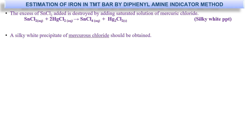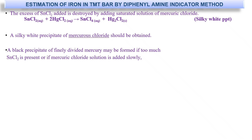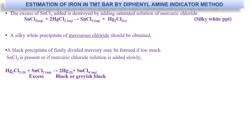The excess stannous chloride added is destroyed by adding a solution of mercuric chloride. You will see a silky white precipitate when you perform this step. A black precipitate of finely divided mercury may form if too much stannous chloride is present or if mercuric chloride solution is added very slowly.